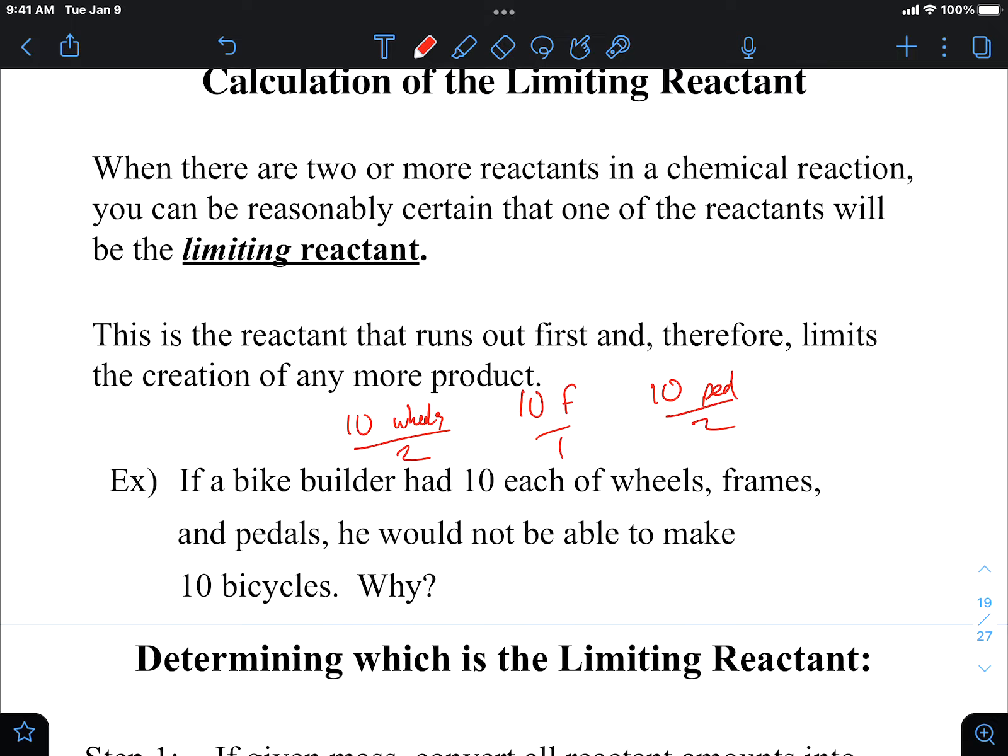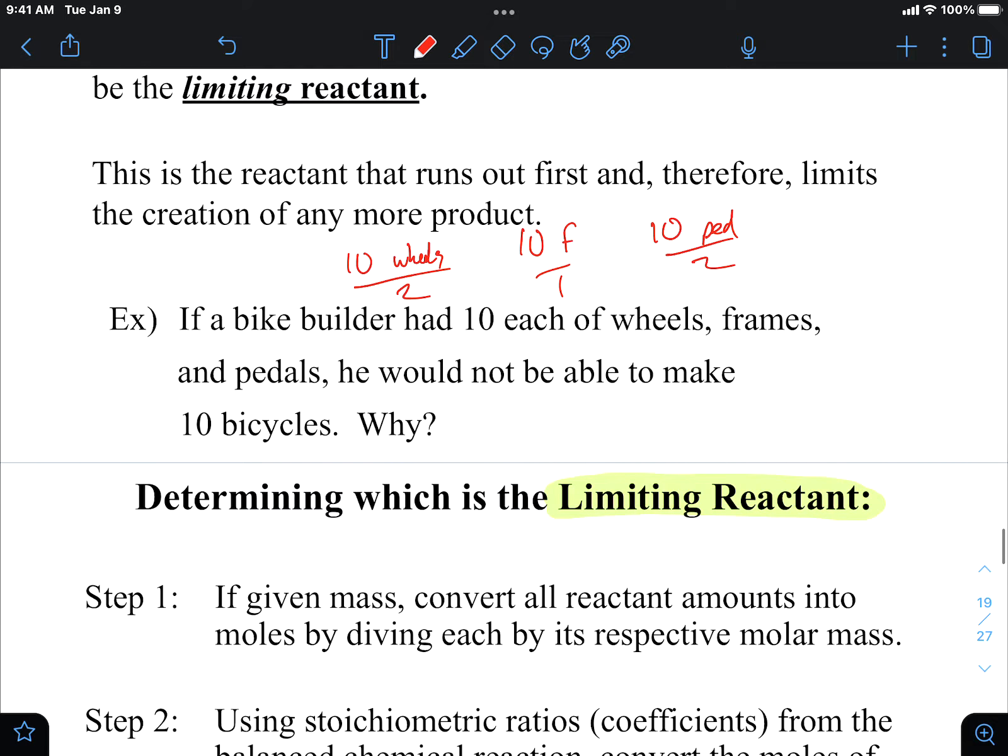No. So in every reaction, something runs out first, and the thing that runs out first is what we call the limiting reactant. The limiting reactant is defined as the reactant which runs out first, or that is completely used up. The wheels were used up, the pedals were used up, the frames were not.